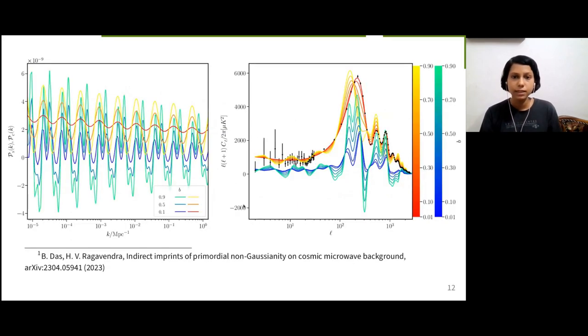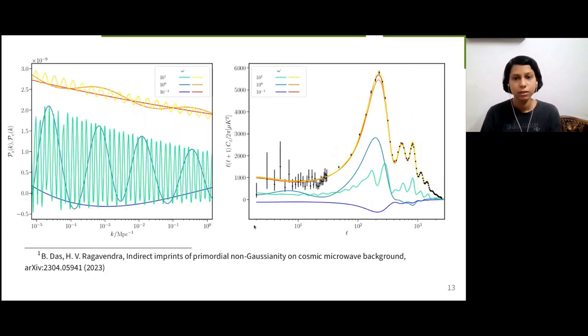On the left panel, we have the variation of PS in shades of red to yellow and PC in shades of blue to green. On the right, we have the corresponding angular power spectrum plot. We are varying the parameter B, which determines the strength of oscillations. Here, we are varying the parameter Omega, which determines the frequency.